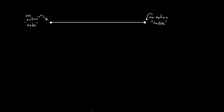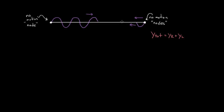Instead of sending in a single pulse, let's say we send in a whole bunch of pulses — a simple harmonic wave. When this reflects, it's going to reflect back on top of itself. The leading edge gets reflected upside down and meets all the rest of the wave behind it, overlapping and creating a total wave composed of the wave traveling to the right plus the wave traveling to the left. For most wavelengths, you can use superposition and interference to figure out what that is, and it's just going to be a mess.